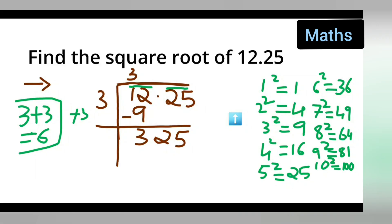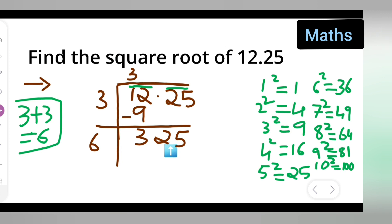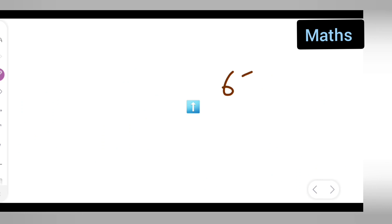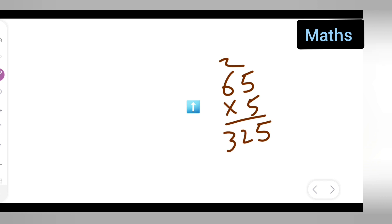Now you have 6, and you need to put one digit so that you get 325. Try with 5 — since the last digit is 5. So we do 65 multiplied by 5: 5 fives are 25, 5 sixes are 30, carry 2, giving 325. We are getting 325, so the next digit is 5.